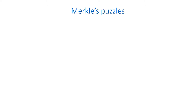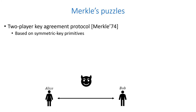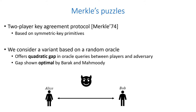We first describe the classic Merkle's Puzzles protocol, in which two players try to agree on a secret key over an insecure channel. We consider a variant of this protocol based on a random oracle. The protocol offers a quadratic gap in oracle queries between the honest players and the adversary, which is trying to recover their secret key. This quadratic gap was shown to be optimal in a paper by Barak and Mahmoudi.